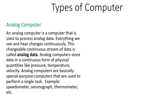Let's see about the analog computer. Analog computer is such type of computer that processes the analog signals. Analog signals are the continuous form of data in the form of physical quantities like pressure, temperature, or velocity. These data are changeable in nature, and those computers that are capable of processing such analog data are the analog computers. Analog computers are basically designed to do specific tasks, so they are a special purpose computer.